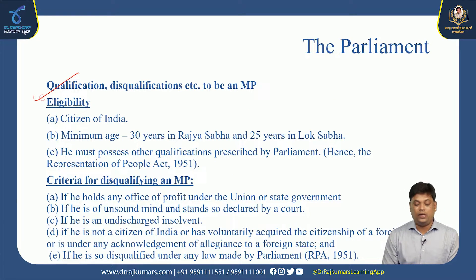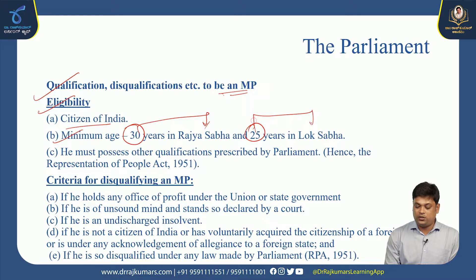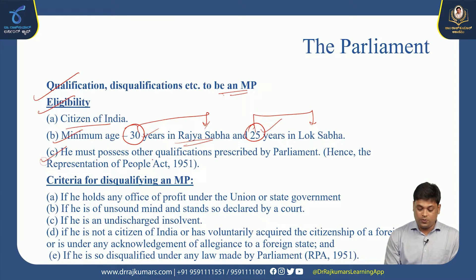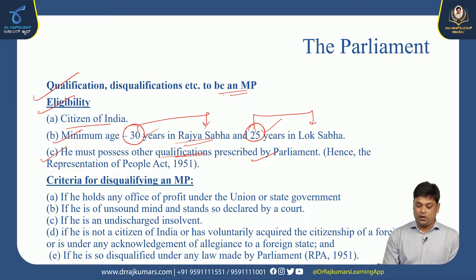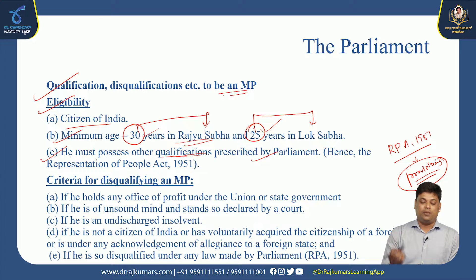Qualifications to be a member of Parliament as per the Indian Constitution: the person must be a citizen of India, with a minimum age of 30 years for Rajya Sabha and 25 years for Lok Sabha. They must also possess other qualifications prescribed by Parliament under the Representation of People Act (RPA) 1951, which provides provisions related to elections and regulations for MPs and MLAs.